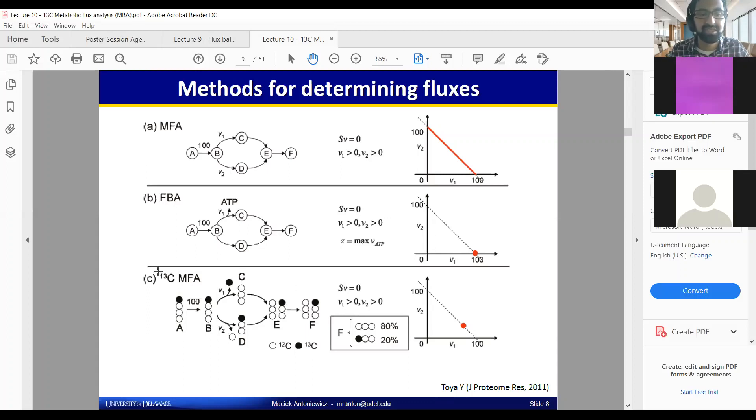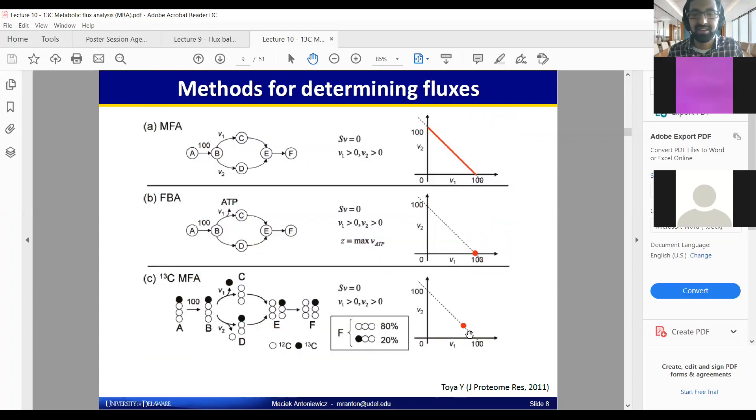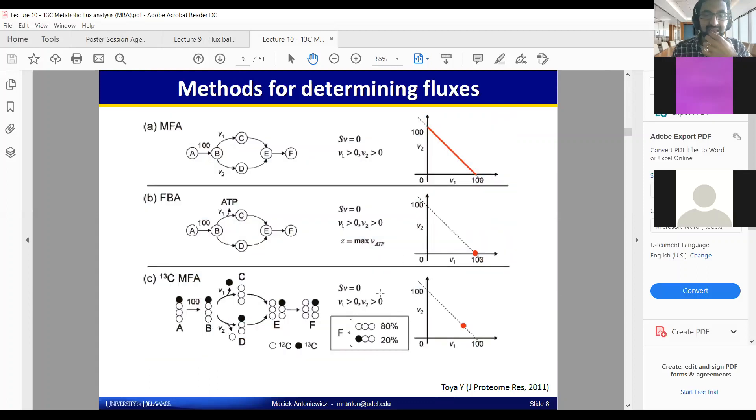When you actually use 13 carbon labeled MFA, you are following the fluxes through particular pathways. To me, this is less about trying to perform an analysis through modeling, even though it's intertwined. To me, it just seems like this is how you experimentally obtain what the right distribution of fluxes was and where you end up on this line.